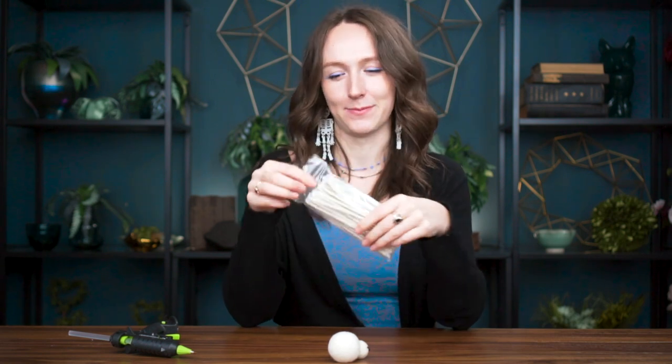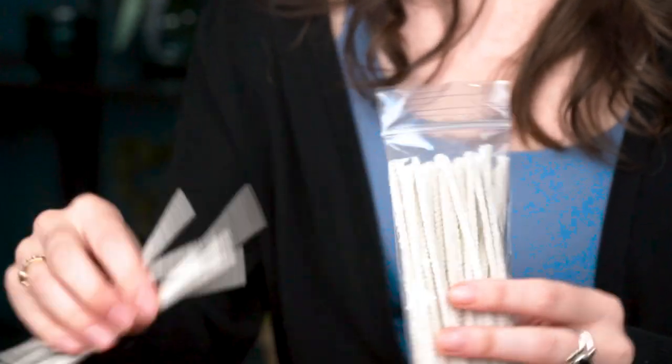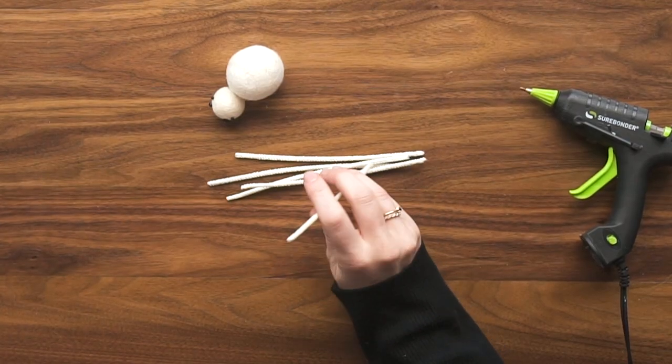Next up, we're going to be grabbing our chenille pipe cleaners and we're going to be using these for the legs and for his little mandibles. So we'll pull out five of these - four for the legs and one for the mandibles.